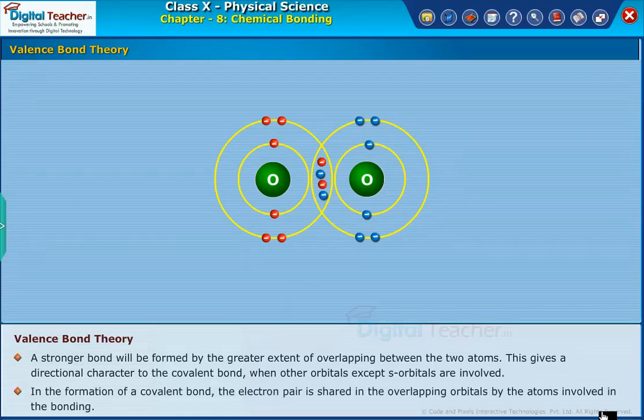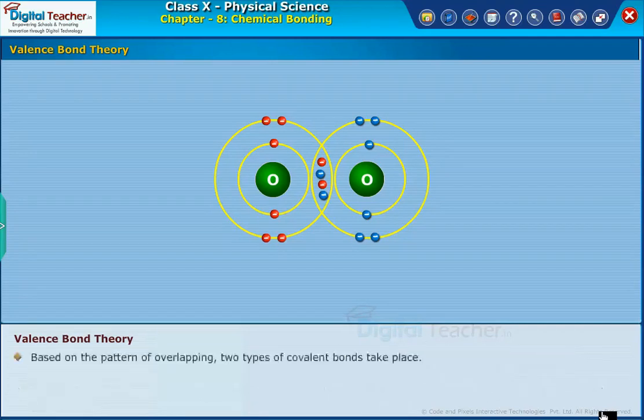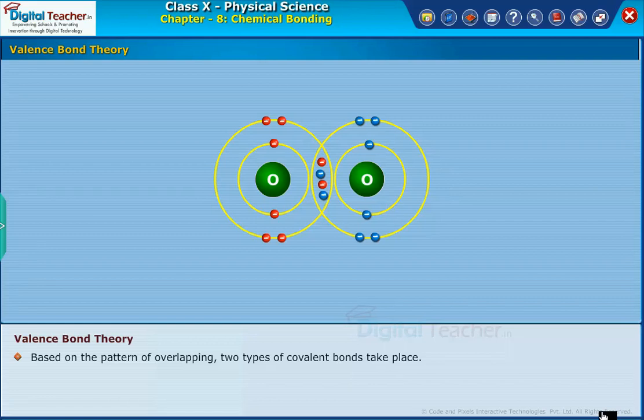The electron pair is shared in the overlapping orbitals by the atoms involved in the bonding. Based on the pattern of overlapping, two types of covalent bonds take place.